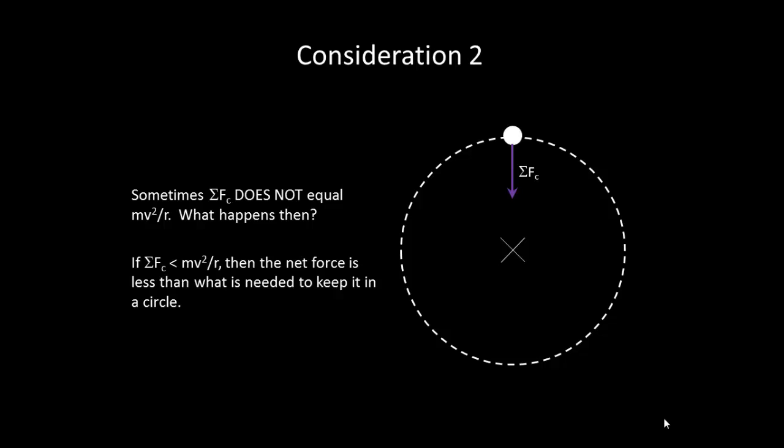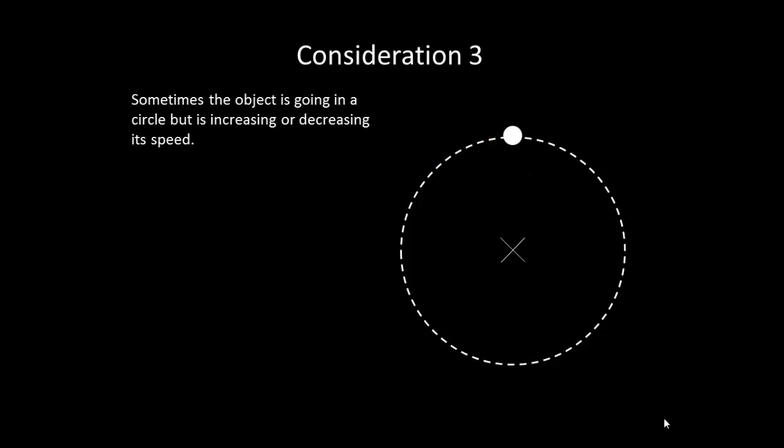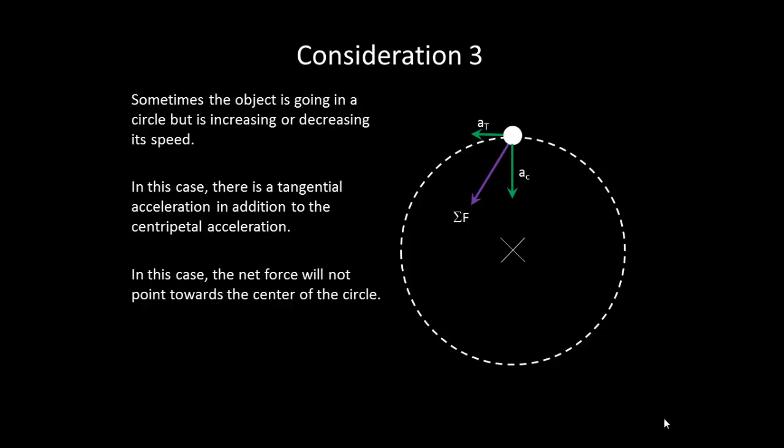If instead the net force is less than mv² over r, then the net force is less than what is needed to keep it in a circle, and it will spiral outward. Our third consideration. Sometimes the object is going in a circle, but it is increasing or decreasing its speed. In this case, there will be a tangential acceleration in addition to the centripetal acceleration. The resulting net force will not point towards the center of the circle. We will not examine this case in any more detail.